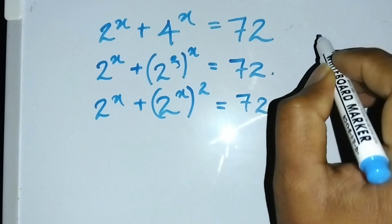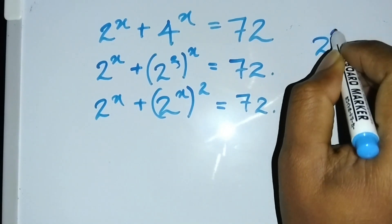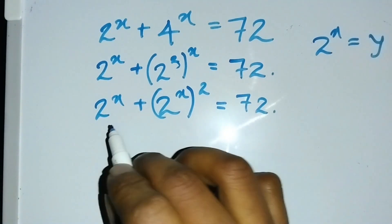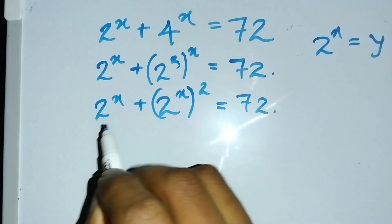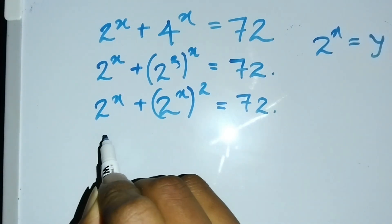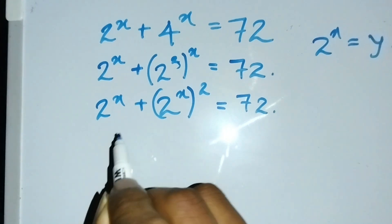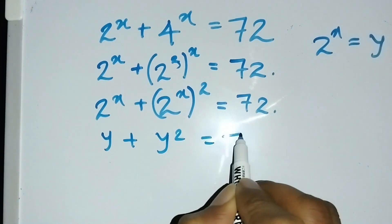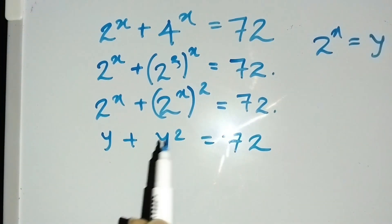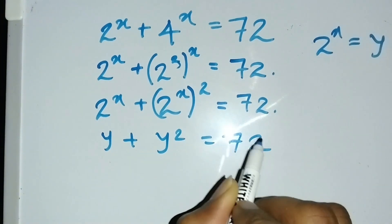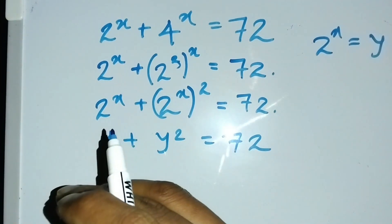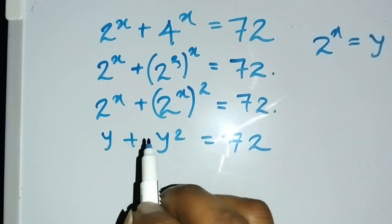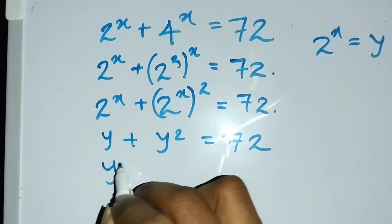As a substitution, I let y equal 2^x. Then I substitute this y value, and I can rewrite the expression as y plus y squared equals 72. Taking 72 to the left side gives me a rearranged expression.